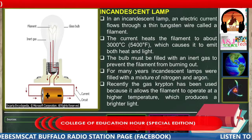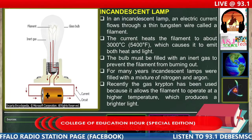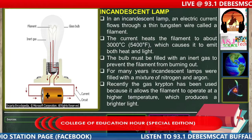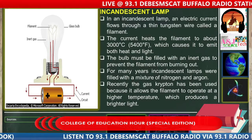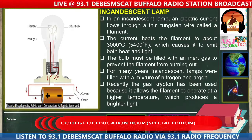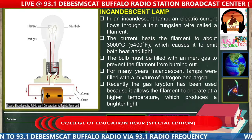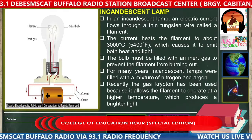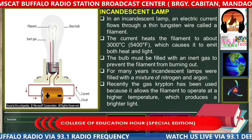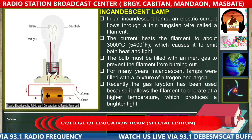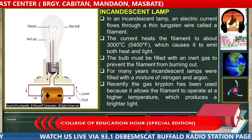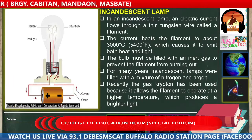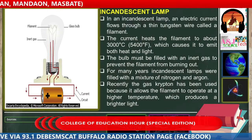And the incandescent lamp. In an incandescent lamp, an electric current flows through a thin tungsten wire called a filament. The current heats the filament to about 3,000 degrees Celsius, or that's equivalent to 5,400 degrees Fahrenheit, which causes it to emit both heat and light. The bulb must be filled with an inert gas to prevent the filament from burning out. For many years, incandescent lamps were filled with a mixture of nitrogen and argon.